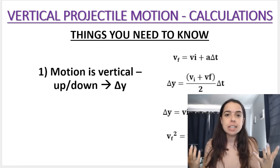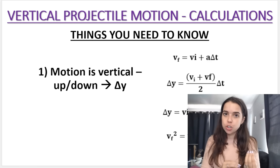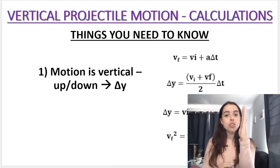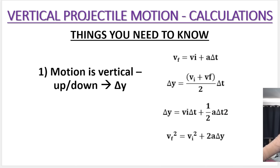The first thing is that it's vertical projectile motion, so we're dealing with up-down motion along the y direction. Because of that, you can see that the equations all have delta y in them. Delta is the symbol for the little triangle — delta y, not delta x. So it's up-down motion.